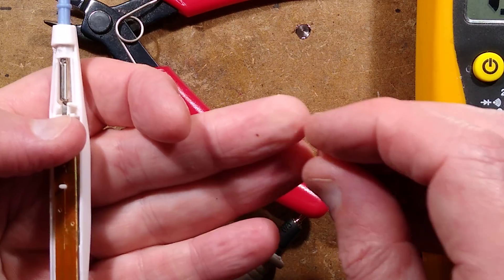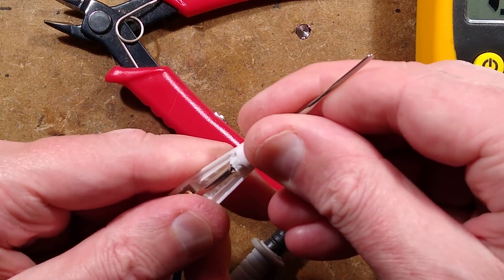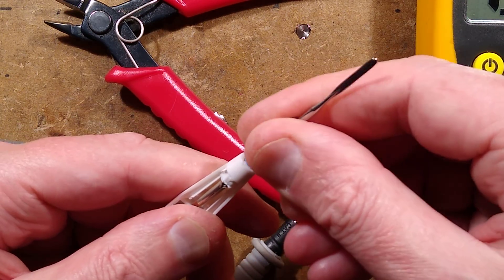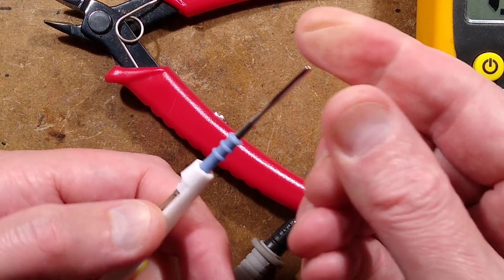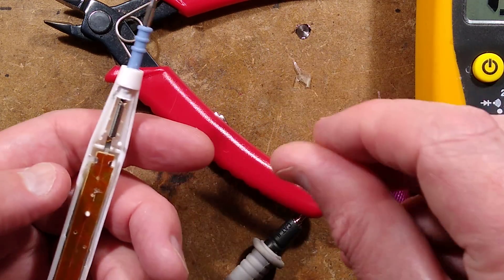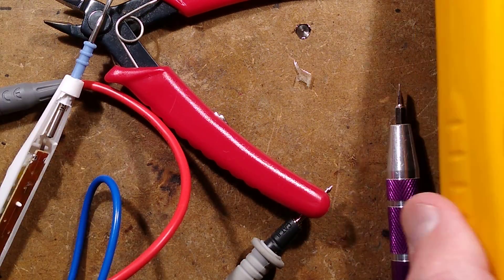So even though it says it's disposable, theoretically you could just pop a new tip into it. I don't know, do they have different shapes? I'm not really sure. But that's interesting, very interesting.